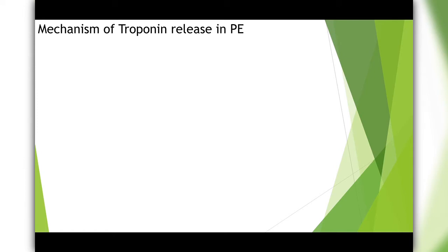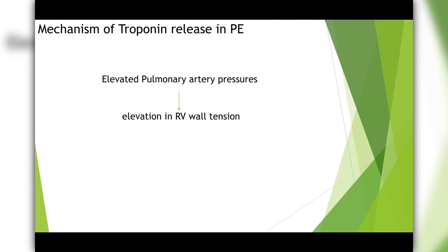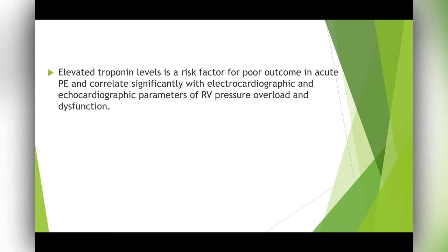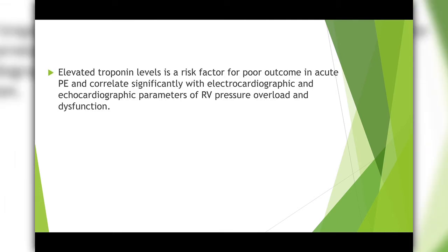Why is troponin elevated in PE and what is its significance? Elevated pulmonary artery pressures cause an increase in RV wall tension, which in turn increases right ventricular oxygen demand and reduces perfusion of the right coronary artery. Elevated troponin levels are a risk factor for poor outcome in acute PE and correlate with ECG and echo findings of RV strain.